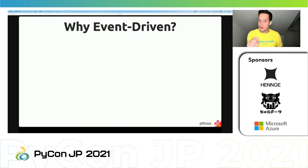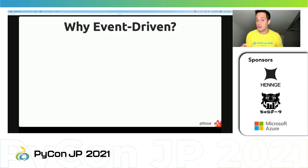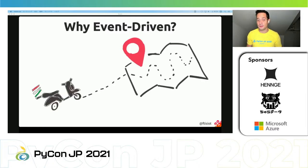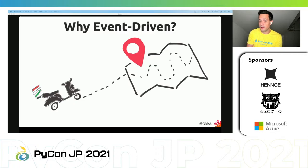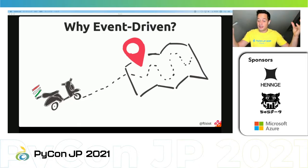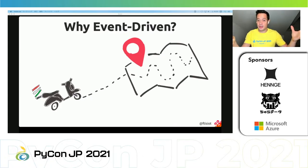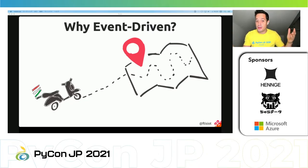Why should we create event-driven applications? The value of information is strictly related to the time it takes to be delivered. Think about the position of a delivery person taking a pizza to your house — you want to know their position from five to twenty seconds ago. If there's a five-minute delay between when the position is taken and when it arrives on your mobile, that information becomes useless. We need to communicate in real time and transmit information across all our components in real time. Basically, this is what Kafka is.